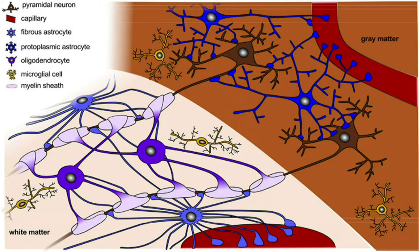Here's a closer look where you have the gray matter and the neurons — this is the cell body of the neuron. And down here is the axon covered in the myelin sheath, along with the glial cells.